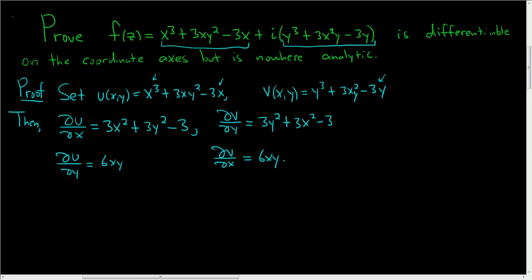So this function is differentiable if and only if all of the first partial derivatives are continuous and the Cauchy-Riemann equations hold. So then, f is differentiable at say z = x + iy, if and only if all of these guys are continuous, and they are, if and only if they're continuous and the Cauchy-Riemann equations hold. So what does that mean? That means that ∂u/∂x is equal to ∂v/∂y, and that's clearly true. These are exactly the same, and ∂u/∂y is equal to negative ∂v/∂x.